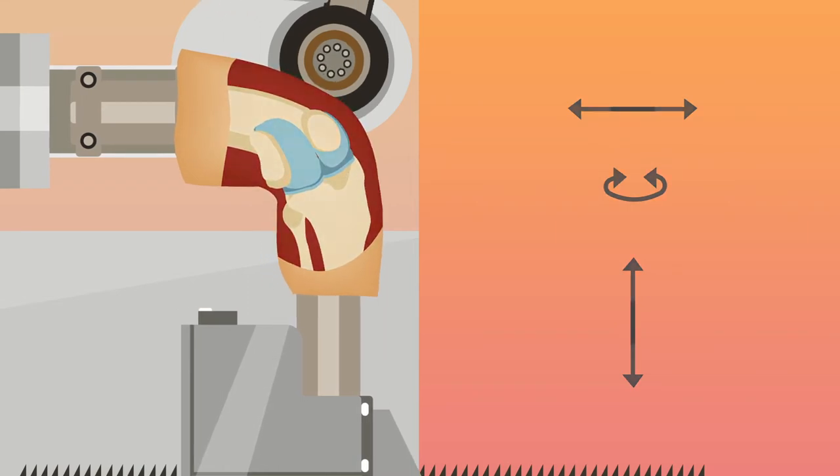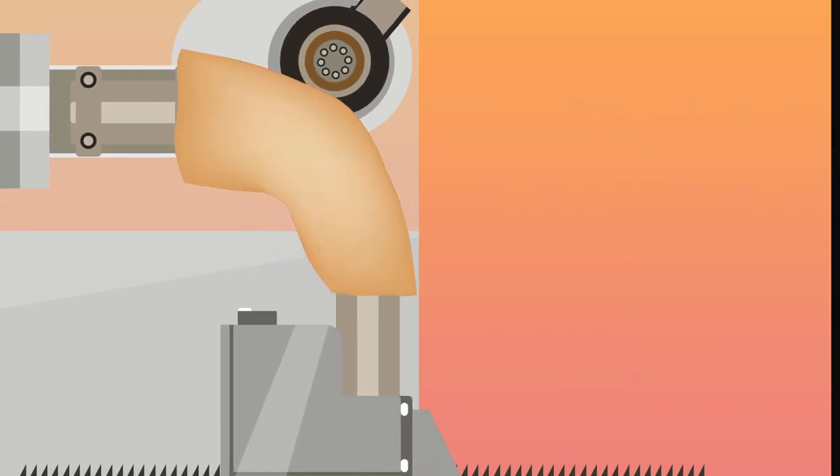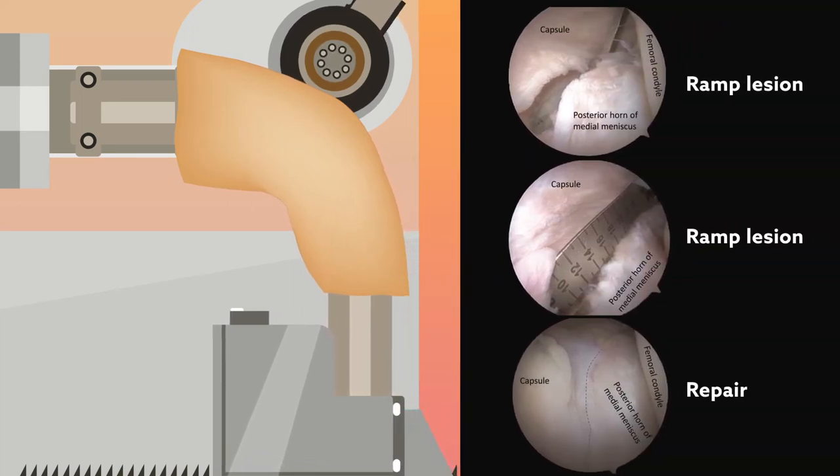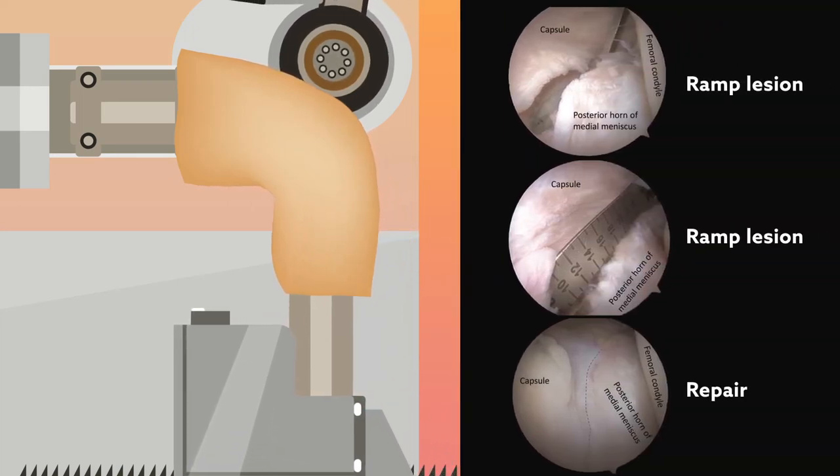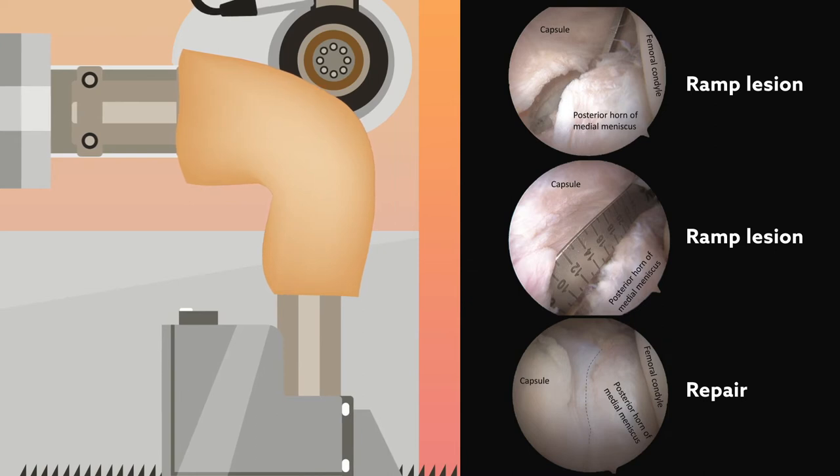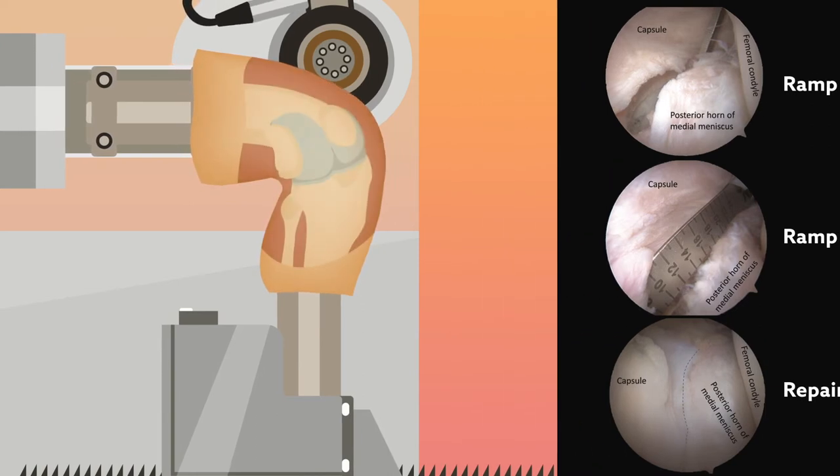The loads were applied to intact knees, knees with a surgically-induced ramp lesion measuring 25 mm, and knees with ramp lesions repaired by the all-inside approach. All specimens had native, intact ACL.